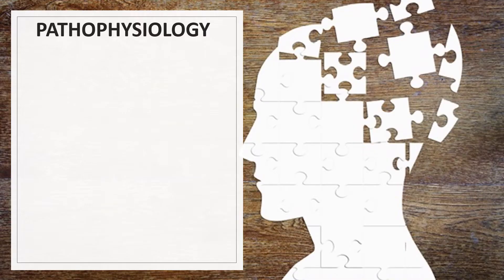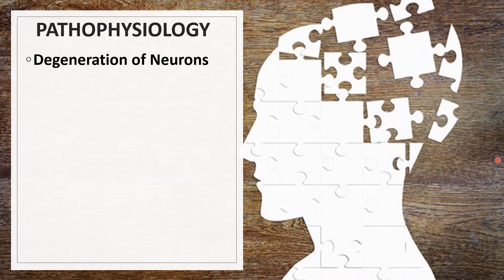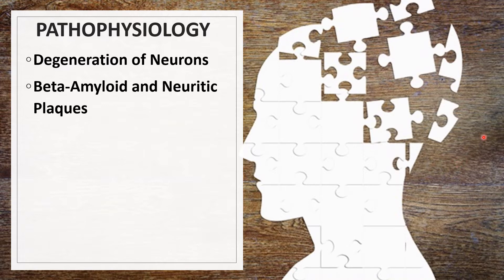For the pathophysiology of Alzheimer's disease, it results from a combination of factors rather than from a single cause. First is the degeneration of neurons — neuronal degeneration occurs in the hippocampus early in Alzheimer's disease, followed later by degeneration of neurons in the cerebral cortex and a subsequent decline in cerebral volume. Next would be beta-amyloid and neuritic plaques. Neuritic plaques, which form outside the neurons, are the hallmark of Alzheimer's disease. These spherical bodies are composed of a central core of beta-amyloid surrounded by neuron remnants, and are seen mainly in the hippocampus and cerebral cortex.